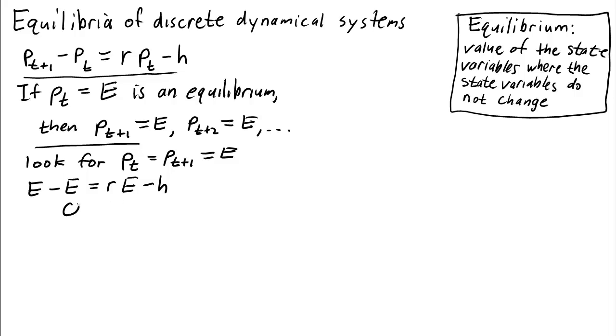That means we have 0 equals re - h, or e equals h divided by r. For this dynamical system, there's one equilibrium: e equals h over r. And you can verify if you plug in h over r for all the P's here, you can see that this dynamical system is satisfied.